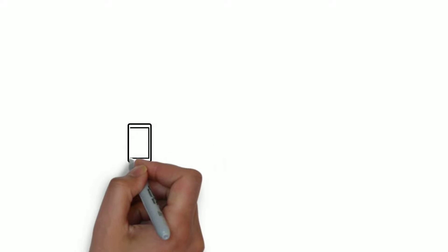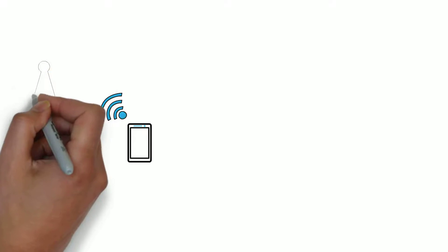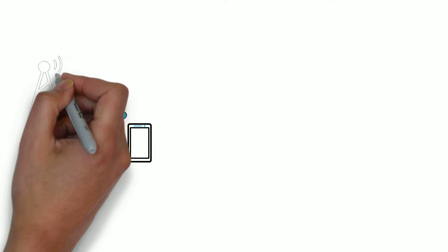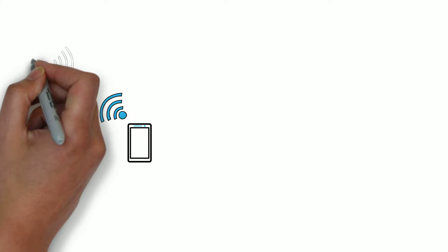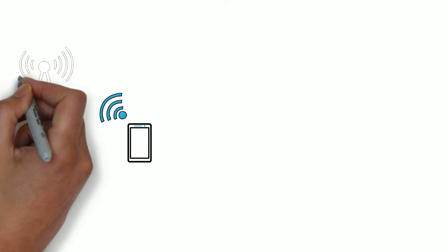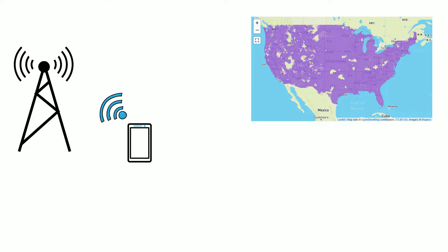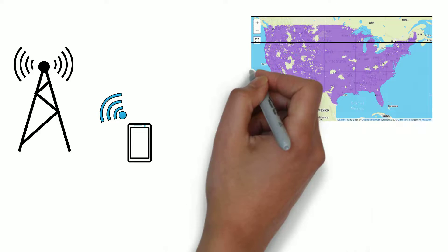Cell phones are constantly in contact with cellular networks when switched on. Cellular networks are divided into cells — this is where the name cell phone comes from. Each cell is served by a cell tower or base station. The size and shape of a cell depend on factors like population density and terrain.